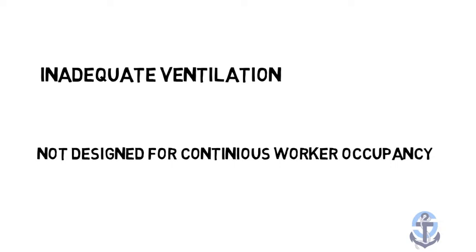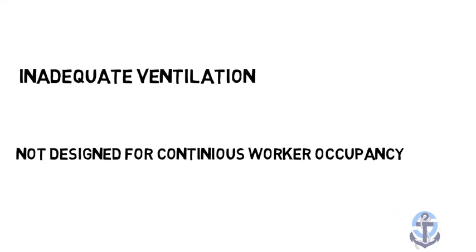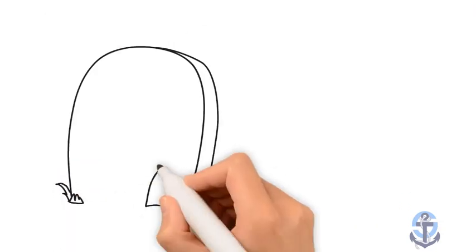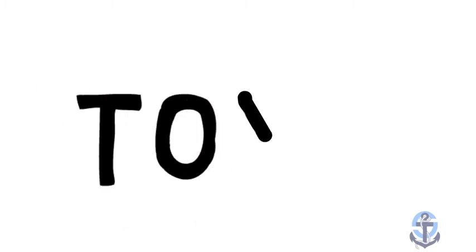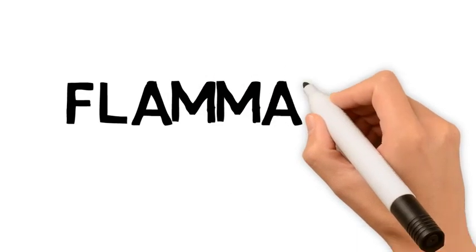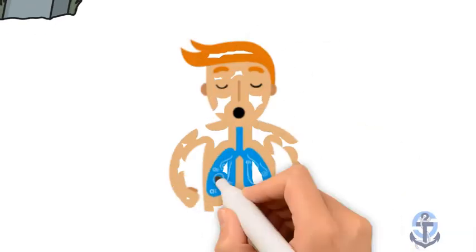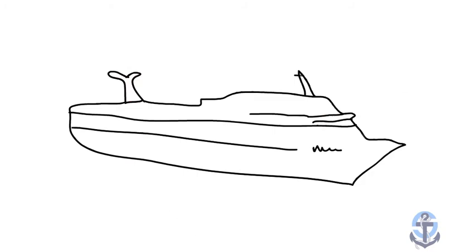The UK regulations also define dangerous space as any enclosed or confined space in which it is foreseeable that the atmosphere may at some stage contain toxic or flammable gases or vapors, or be deficient in oxygen to the extent that it may endanger the life or health of any person entering that space.